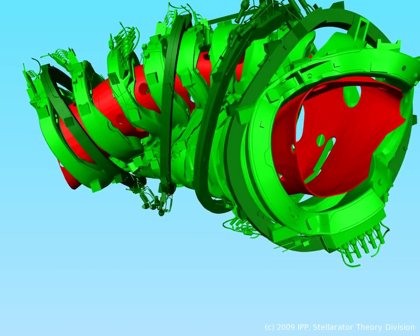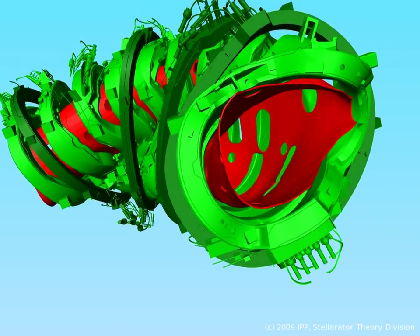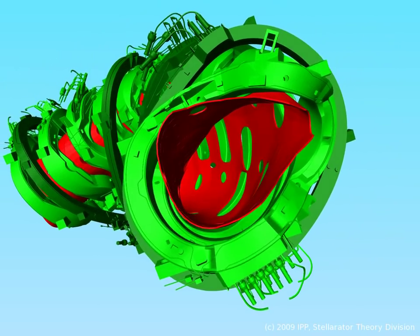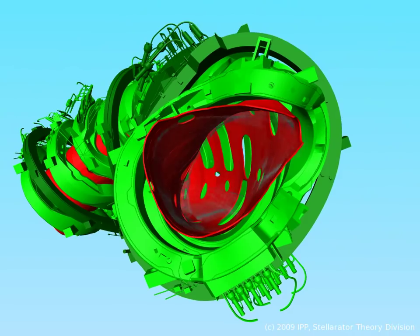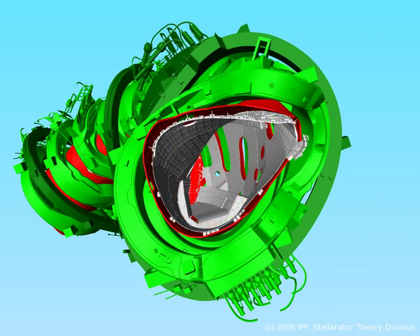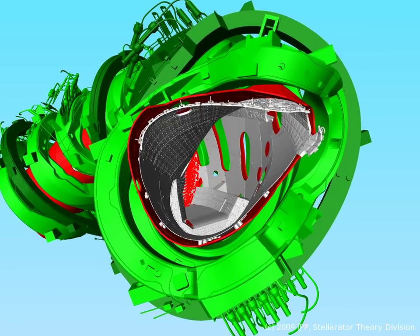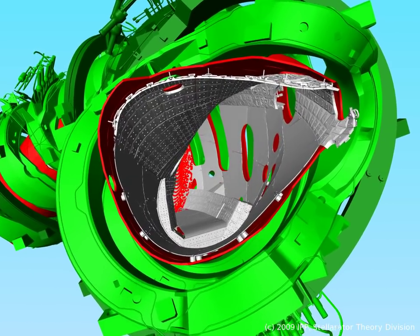We now direct our attention to the region within the vacuum vessel. The metallic luster indicates the diverter and the wall armor, which are the only components which must withstand direct contact with the plasma.